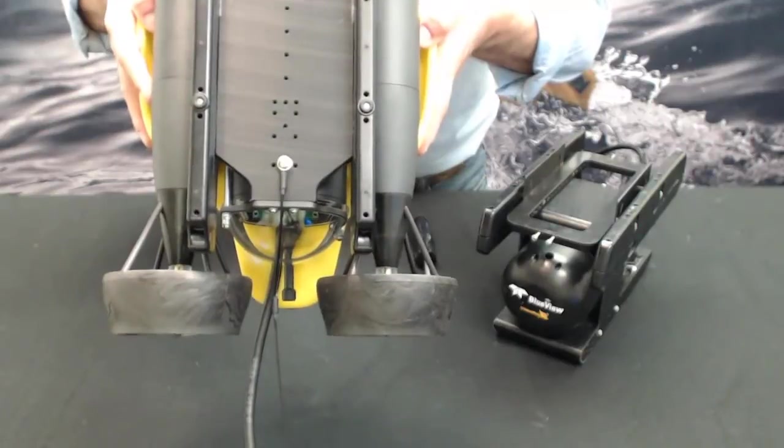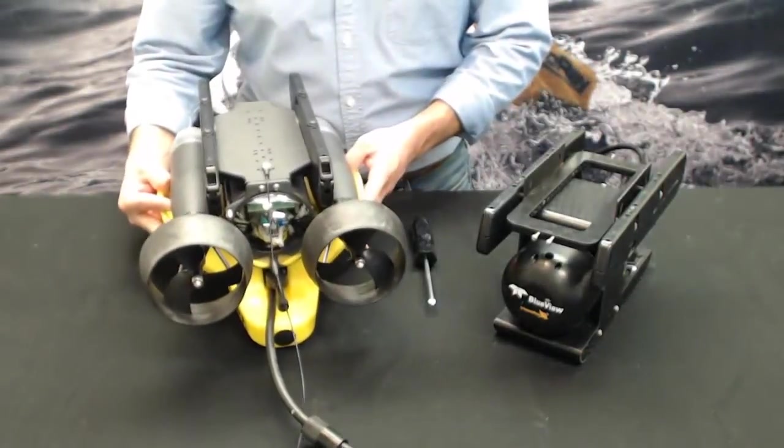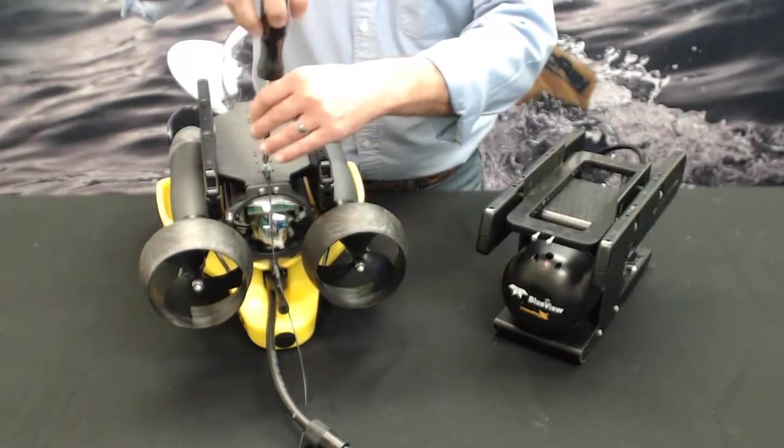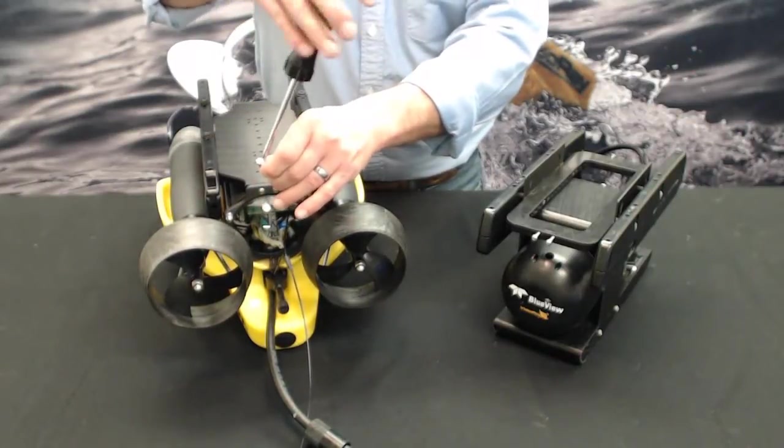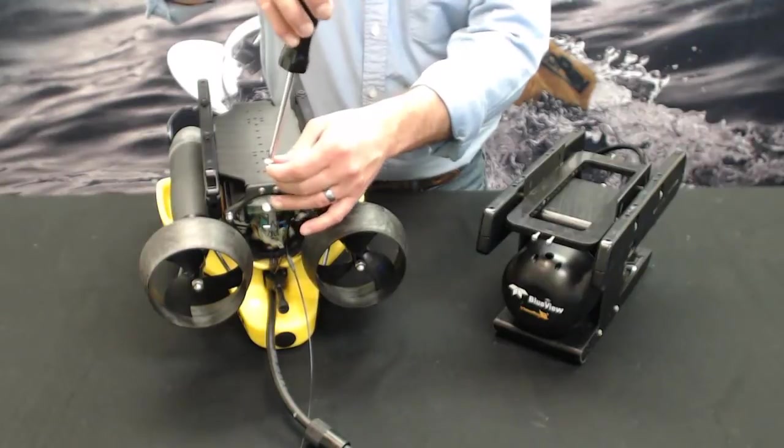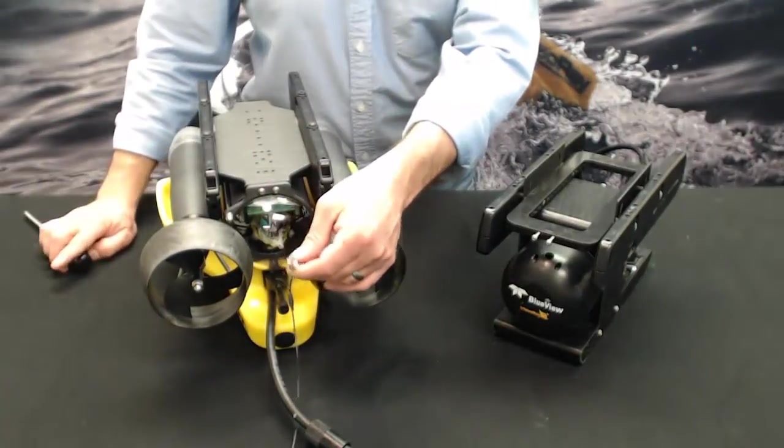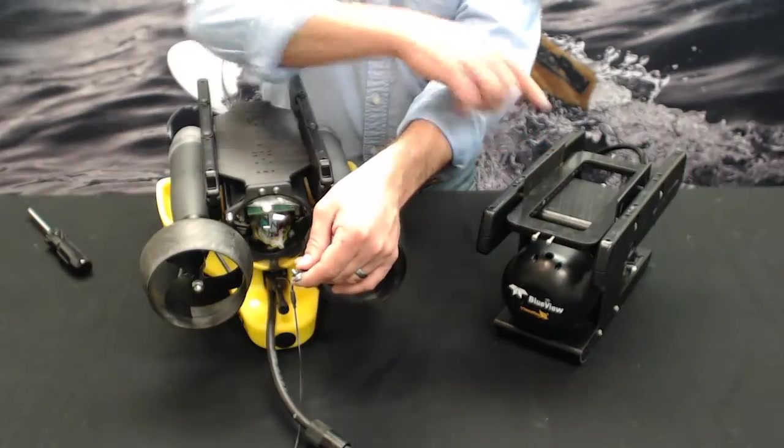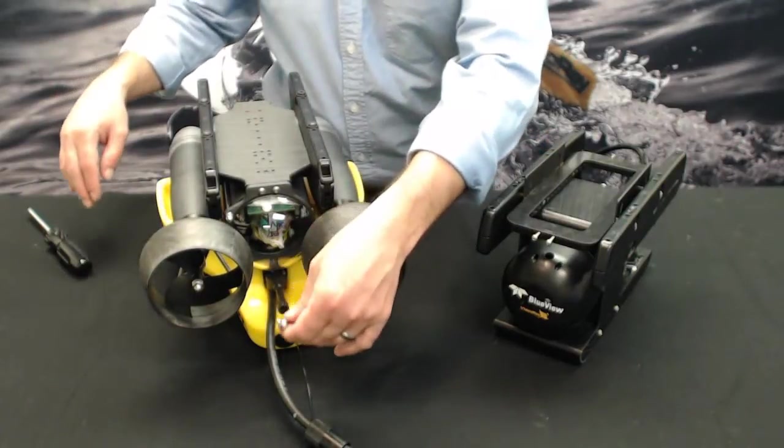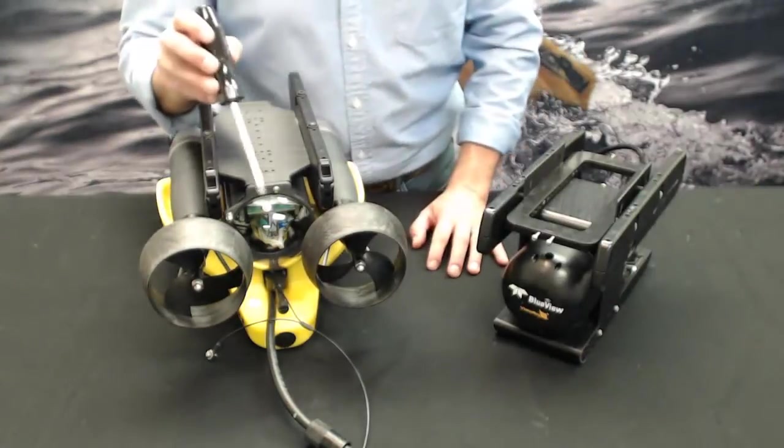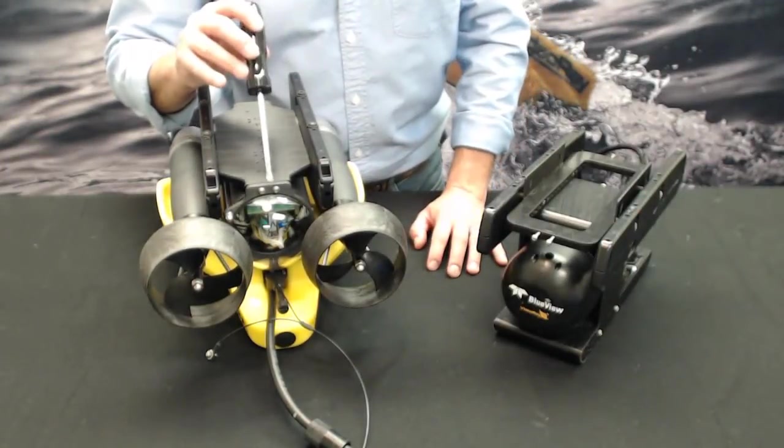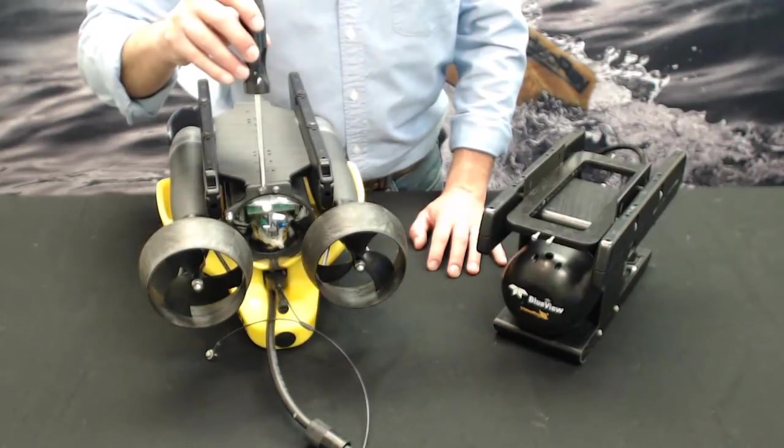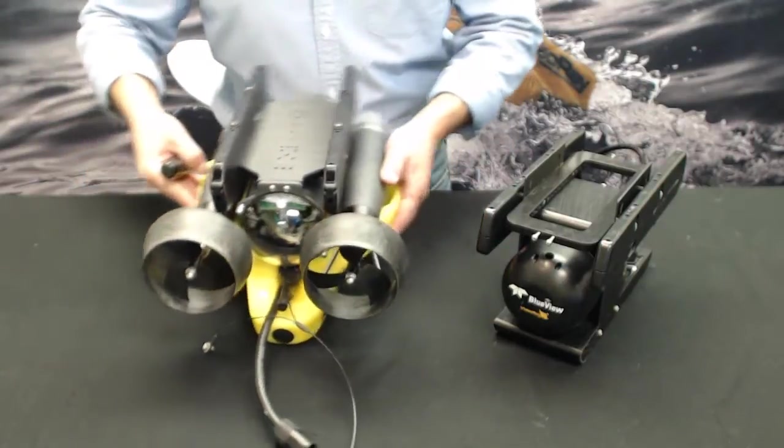It's a simple Phillips head screw that we need to remove from the skid. Keep that screw in the wire because we'll remount this on the back of the BlueView skid. There are four screws to take off the current ballast skid on the Pro 4: two on the rear and two on the front.